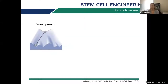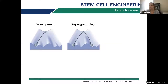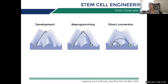In stem cell biology, we use the analogy of a ball rolling down a hill — it's a continuum, not discrete jumps. We now know the ball doesn't just roll down; referring to the Nobel Prize-winning finding, we can create induced pluripotent stem cells and kick that ball all the way back up. In the last decade we've also realized we can kick the ball over little hills and valleys, going from one cell type to an adjacent one.